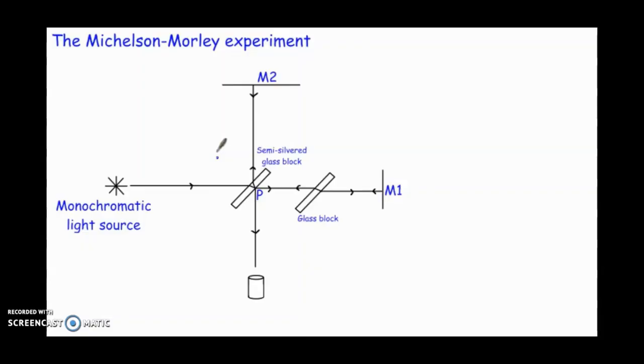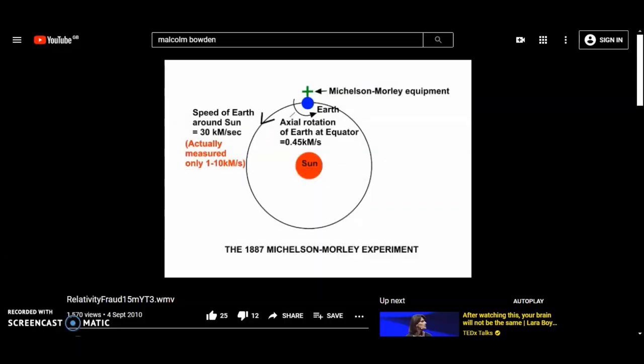In 1887, Michelson and Morley conducted their famous experiment where they tried to prove the motion of the earth. They passed two beams of light, one at the direction of travel of the earth and the other at right angles to the direction of travel. Their hypothesis was that they would find the earth moving around the sun at 30 km per second, but they only managed to measure 1 to 10 km per second. Once again, they proved that the earth was stationary.